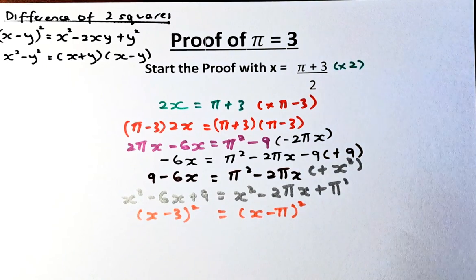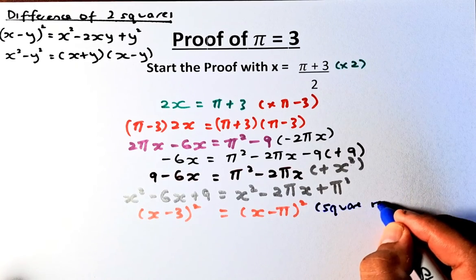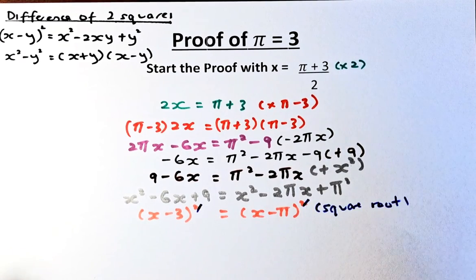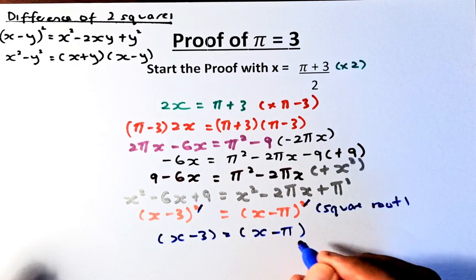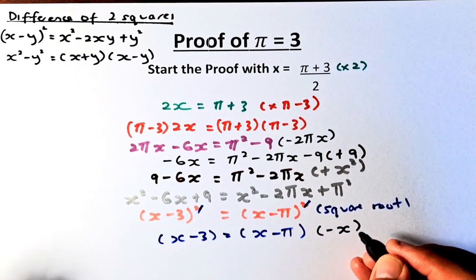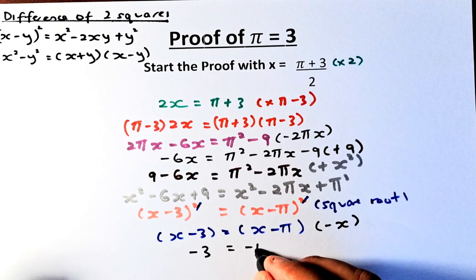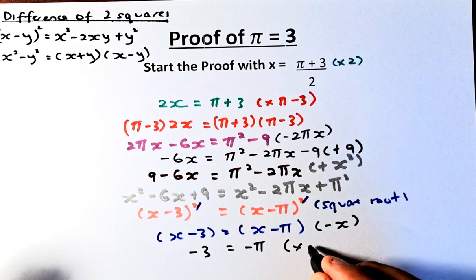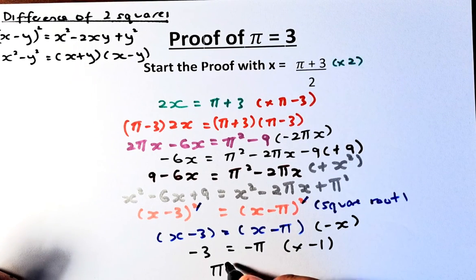So we now have (x minus 3) squared equals (x minus pi) squared. Since both sides are squared, we take the square root of both sides — the squares cancel — leaving x minus 3 equals x minus pi. Finally, we subtract x from both sides: x minus x leaves minus 3 on the left and minus pi on the right. Multiplying by negative 1 gives pi equals 3.